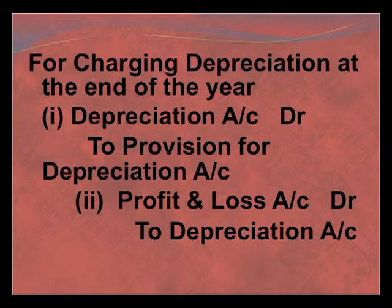Under the second method — maintaining a provision for depreciation account — at the end of the year we pass the entry: depreciation account debit to provision for depreciation account. This depreciation is then transferred to profit and loss account by the entry: profit and loss account debit to depreciation account. Here we do not transfer the depreciation to the asset account; the asset is maintained at cost price, and depreciation is accumulated in the separate provision for depreciation account.